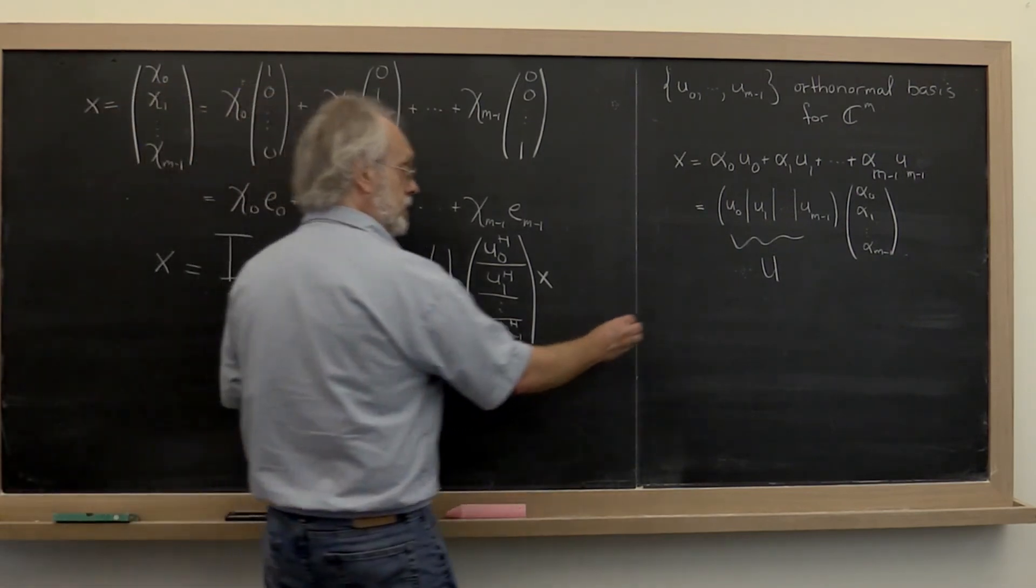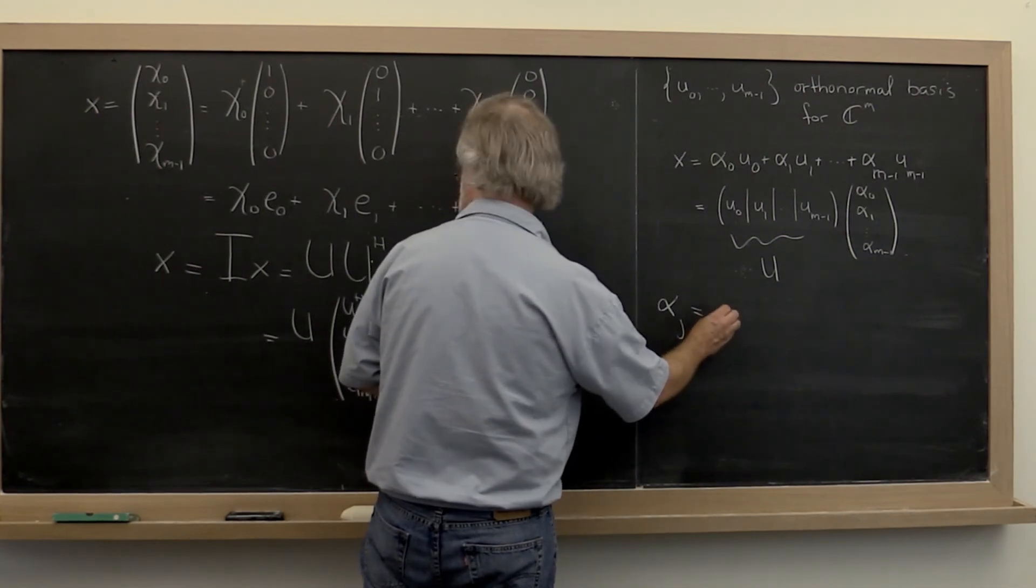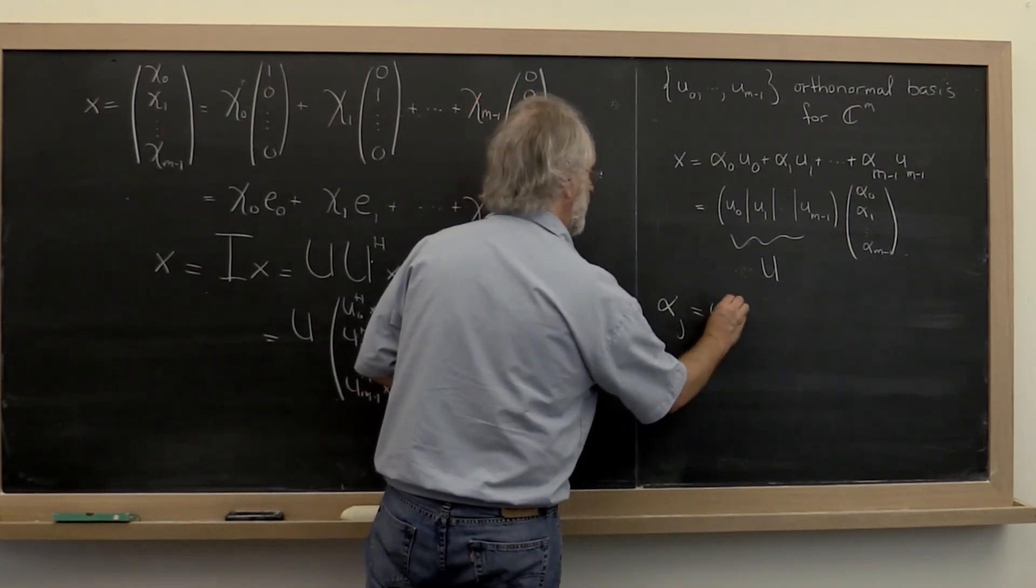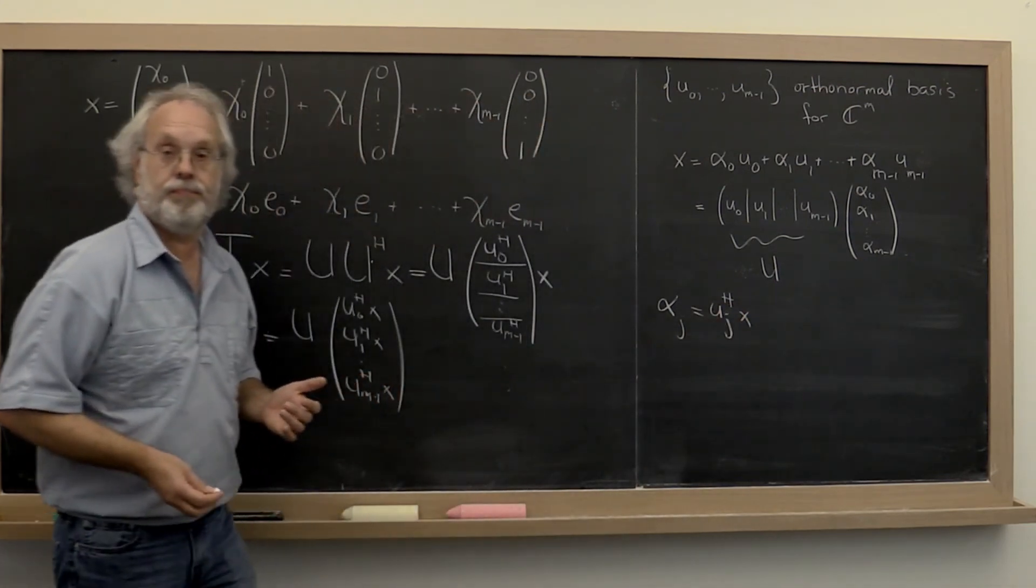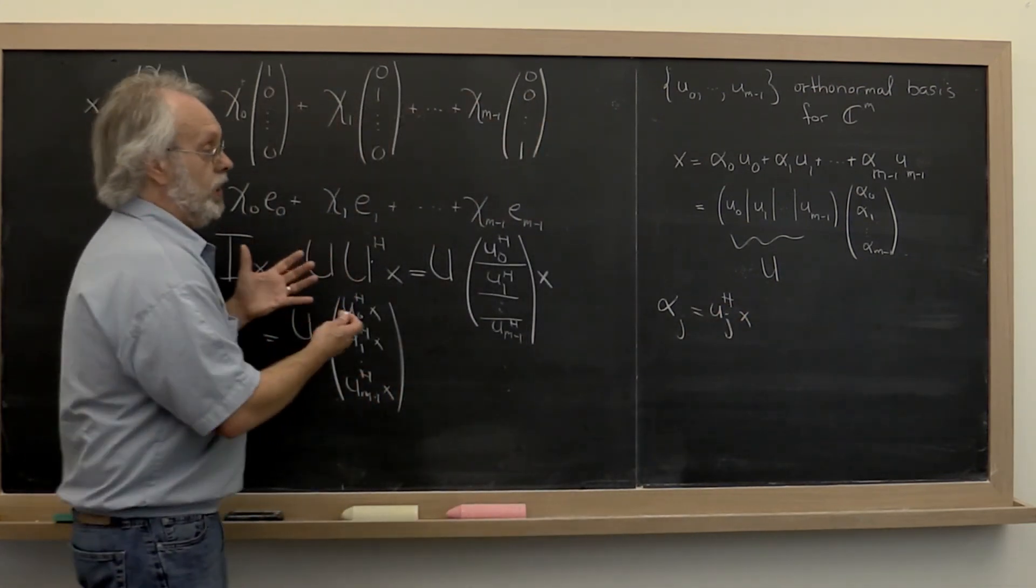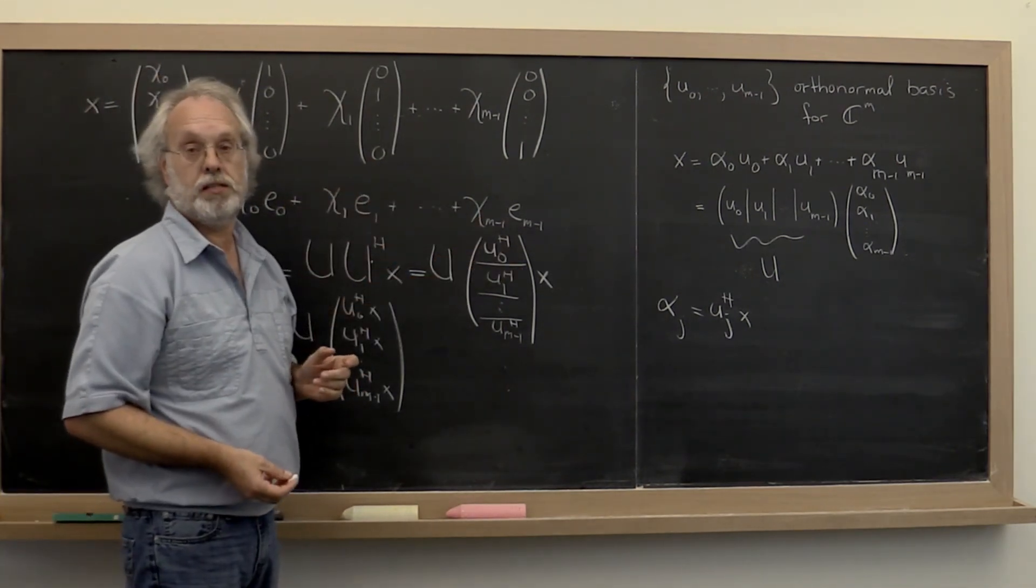But regardless, alpha sub j is just equal to u sub j Hermitian transpose times x. And bingo! We can take a vector and we can view it in terms of a new orthonormal basis.